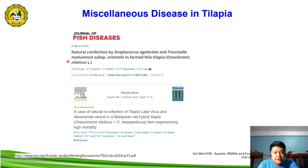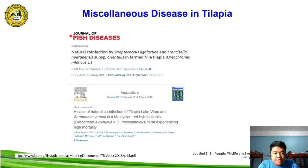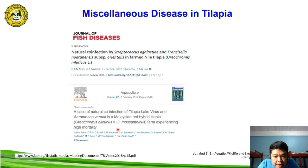There is also a natural co-infection between Streptococcus agalactiae and FNO (Francisella noatonensis orientalis) in farm Nile tilapia, reported in the Journal of Fish Diseases in 2016. Another study showed a case of natural co-infection of tilapia lake virus and Aeromonas veronii in Malaysian red hybrid tilapia farms experiencing high mortality — a co-infection between the bacterium Aeromonas veronii and a virus, tilapia lake virus.